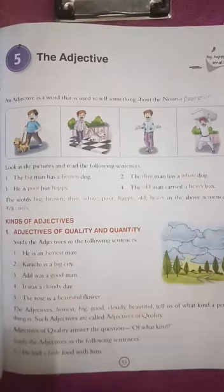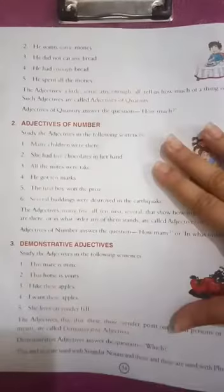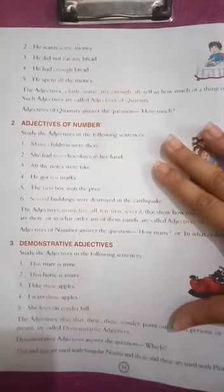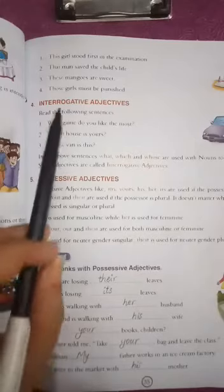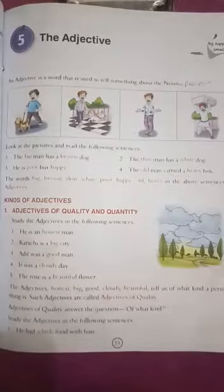Now let's come to the kinds of adjectives. There are five kinds provided in your book. First is adjectives of quality and quantity. Second, adjectives of number. Third, demonstrative adjectives. Fourth, interrogative adjectives. And fifth, possessive adjectives. Let's start with the first kind.